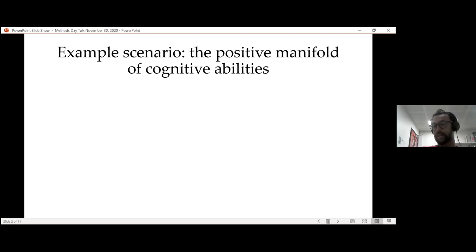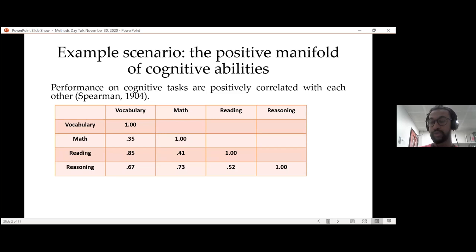As an example scenario, you have the positive manifold of cognitive abilities, which is one of the most replicable results in all of psychology, particularly in intelligence research. For example, we know that if you do well on one cognitive task, such as vocabulary, you also tend to do very well on other cognitive tasks, such as math. So all of these are positively correlated with each other, which Spearman found in the early 20th century, and he called this the positive manifold of cognitive abilities.